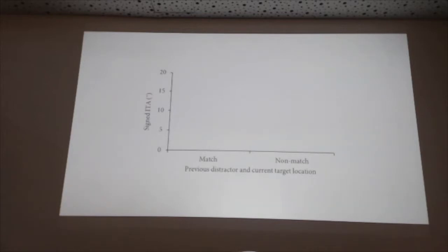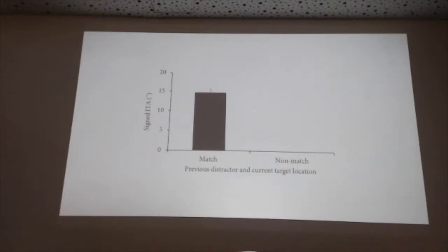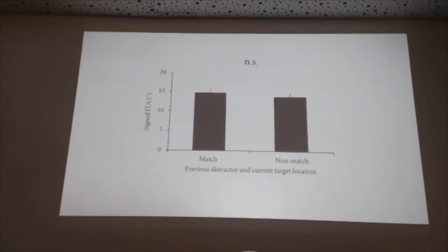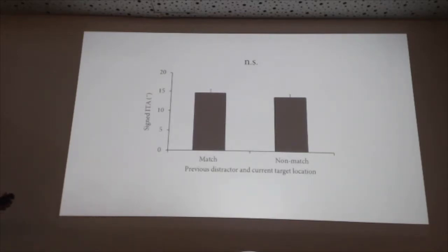What we found is that on match trials there's some curvature — not surprisingly, you're not going directly to the target. On non-match trials there's curvature as well. Numerically the effect is in the direction you might expect, but it's not significant. So maybe we're underpowered, or maybe this effect isn't all that robust — we're not seeing strong evidence of negative position priming.